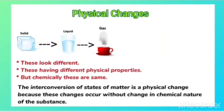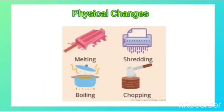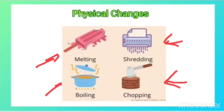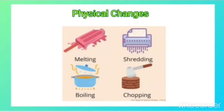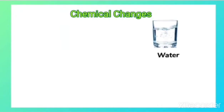So we can say that the interconversion of states of matter is a physical change, because these changes occur without any change in the chemical nature of the substance. Examples like melting, boiling, chopping, and shredding are all physical changes because these processes do not involve any chemical changes in the substance.